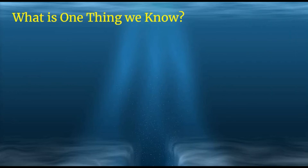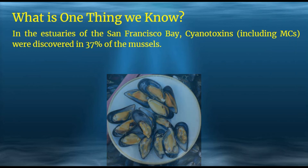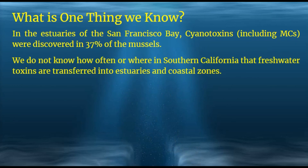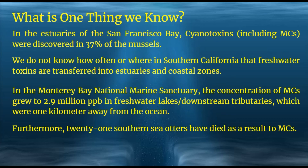A recent study showed that microcystins were detected in 37% of mussels in the San Francisco Bay's estuaries collected between 2011 and 2016, indicating that this phenomenon may result in contamination of fisheries in the ocean. We do not know how often or where in Southern California freshwater toxins are transferred into estuaries and coastal zones. The pathogen Microcystis aeruginosa may have migrated to Southern California by latching onto shellfish. In the Monterey Bay National Marine Sanctuary, microcystin concentrations grew to 2.9 million parts per billion in freshwater lakes and downstream tributaries one kilometer from the ocean.